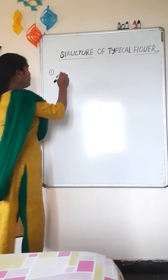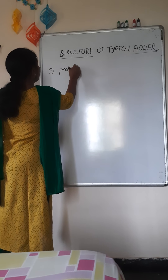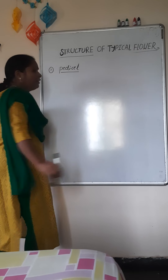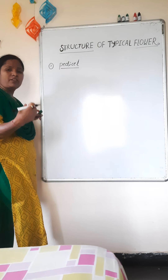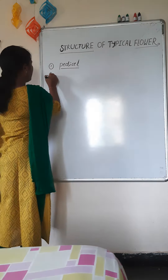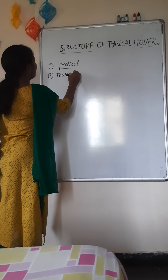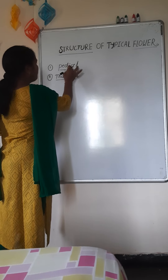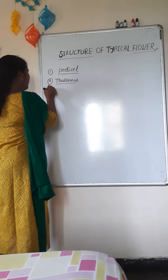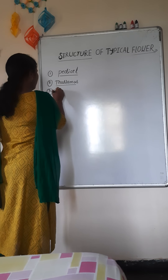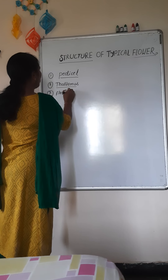Which three parts? The first is the pedicel. What is meant by the pedicel? The pedicel is the stalk of the flower. Second part is the thalamus. What is meant by the thalamus? The thalamus is the swollen tip of the pedicel, and this bears the remaining floral whorls — it is called the floral whorls.